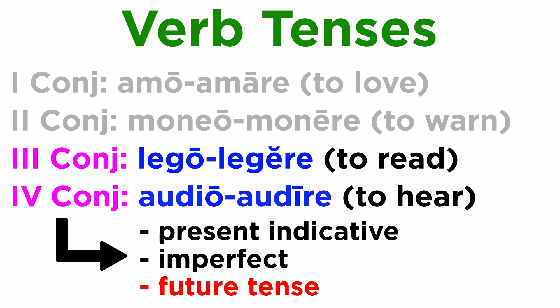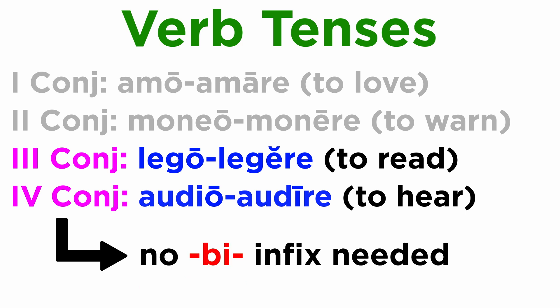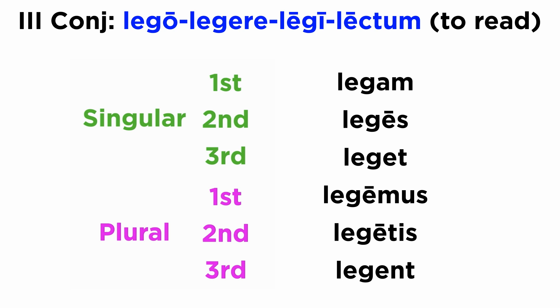It will not be difficult since the future of the fourth conjugation is very similar to the future for the third conjugation and the io verbs. Again, these verbs do not need any be-infix here, but after shortening the long I from the present stem, they will add the same endings that we saw for lego legere.